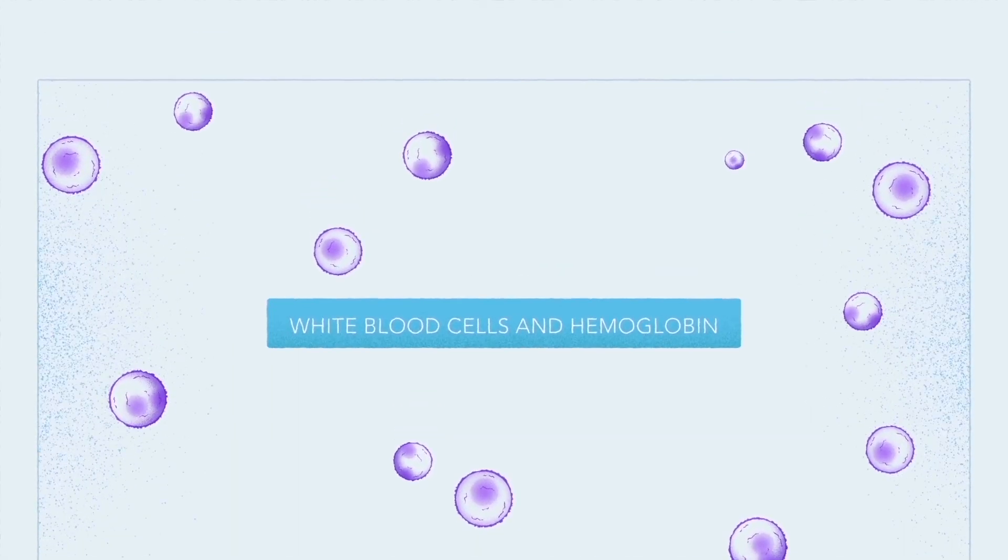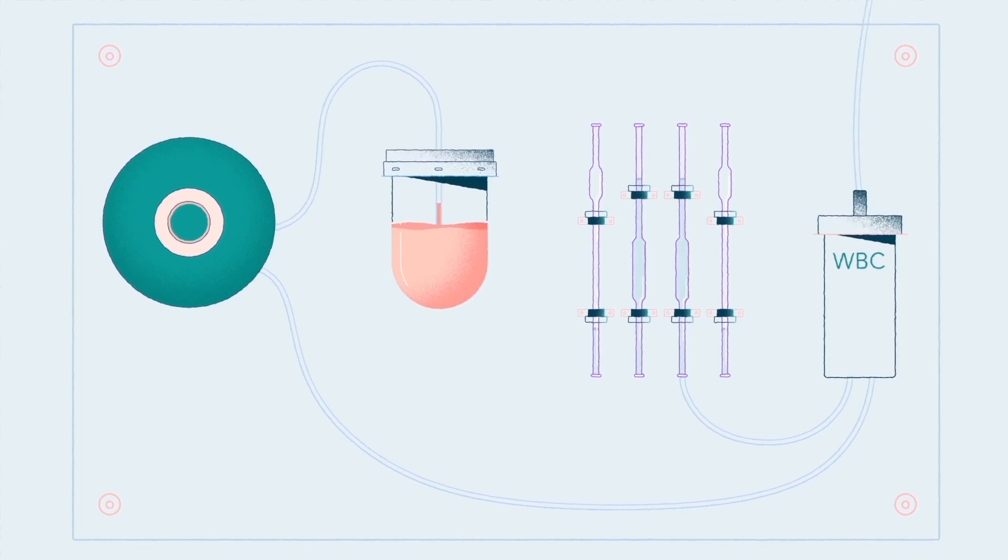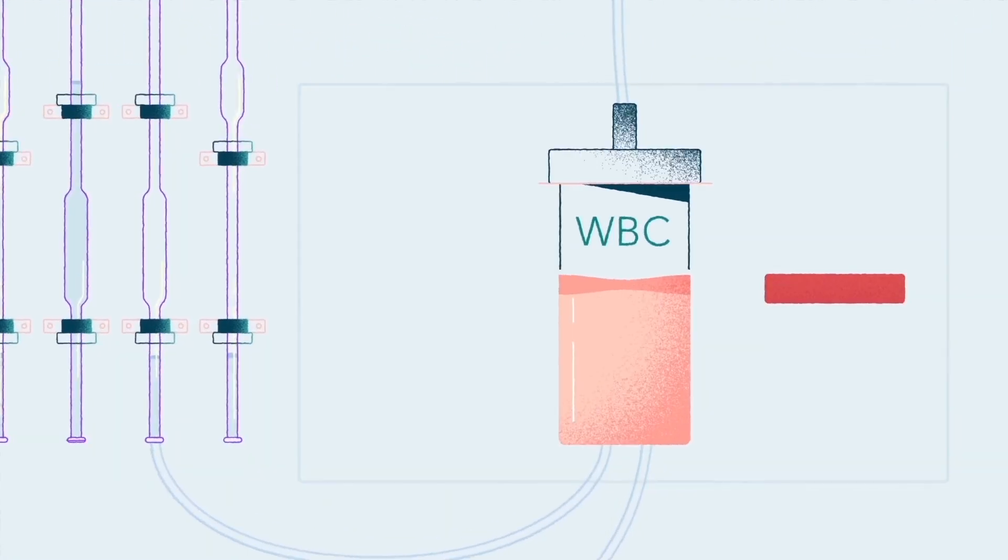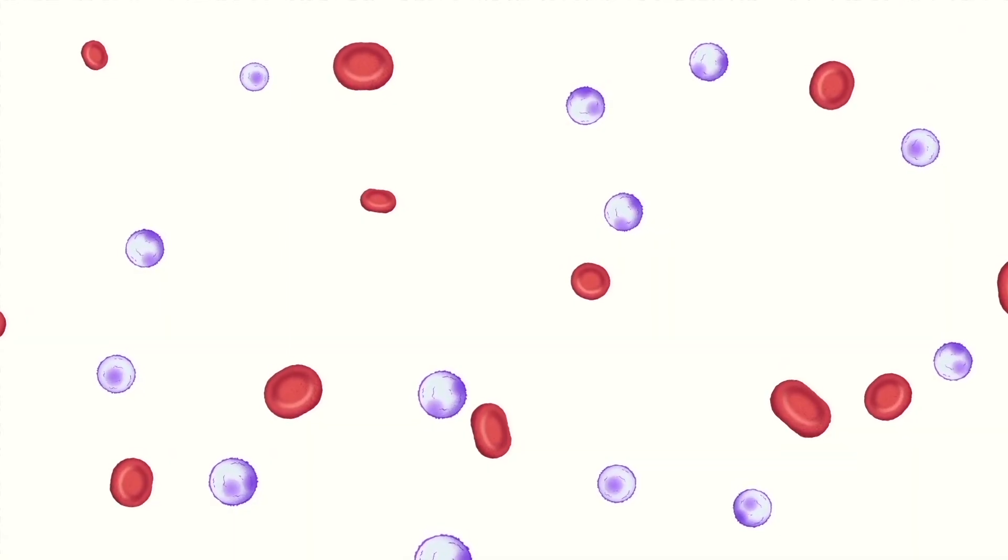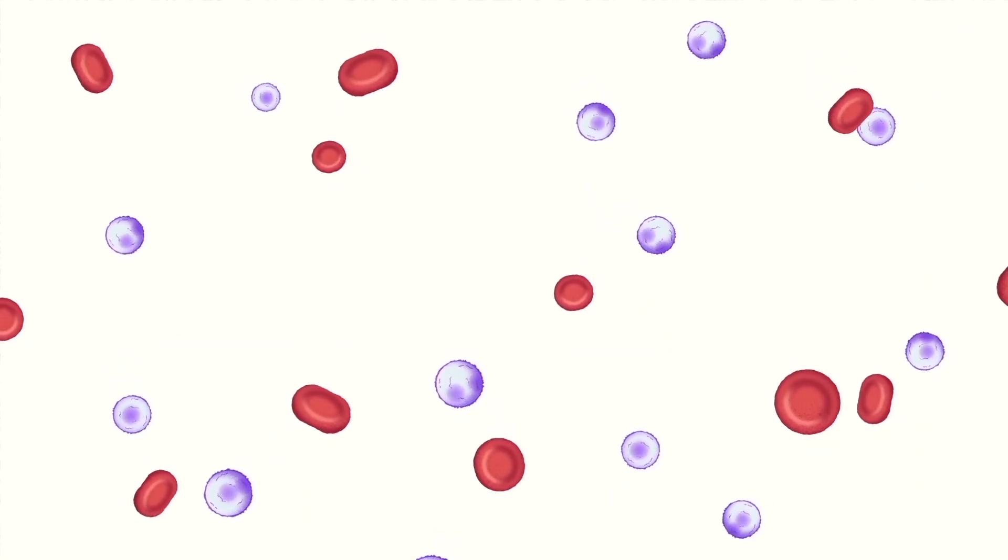For white blood cells and hemoglobin, the first dilution is diluted with the same volume of lysis reagent dispensed by the lysis pipette. The second dilution of 1 to 400 is transferred to the WBC measuring chamber. In the measuring chamber, the lysis reagent hemolyzes the red blood cells, releasing the hemoglobin while simultaneously shrinking the white blood cells.